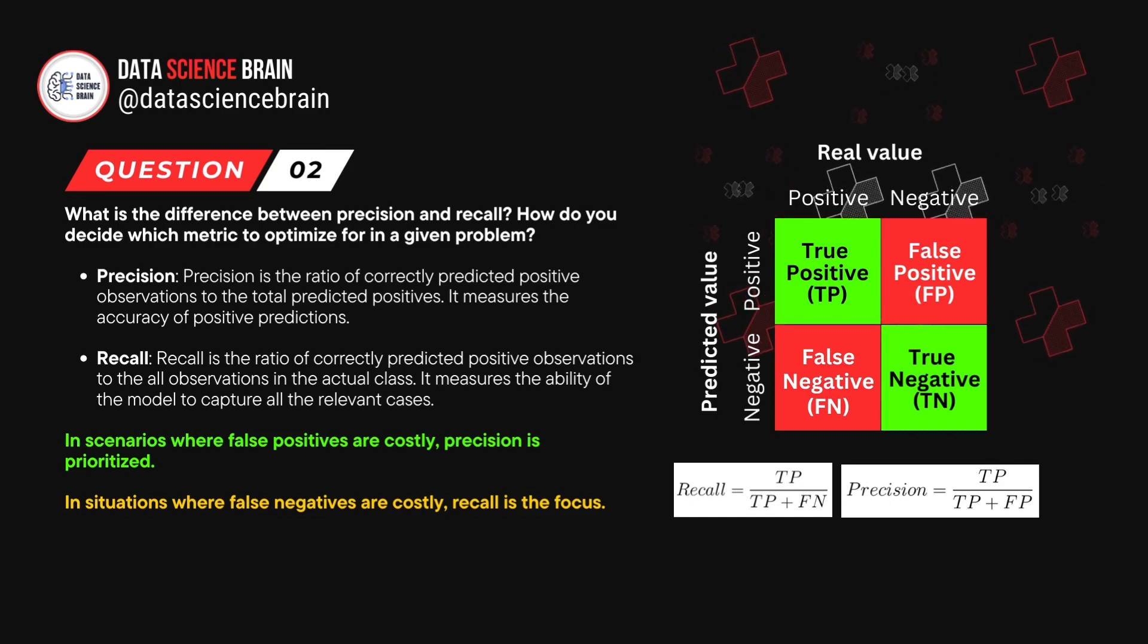On the other hand, recall is the ratio of correctly predicted positive observations to all the observations in the actual class. It measures the ability of the model to capture all the relevant cases.